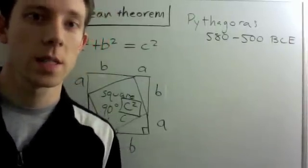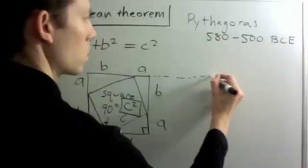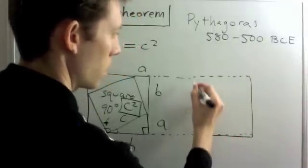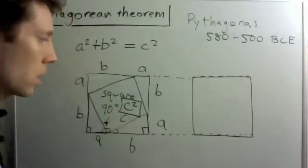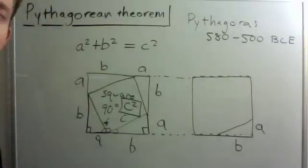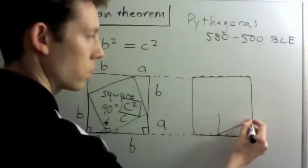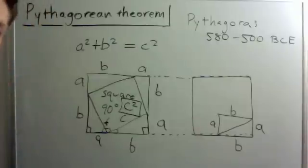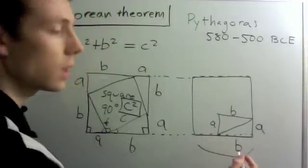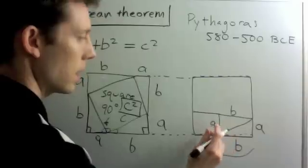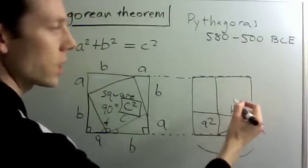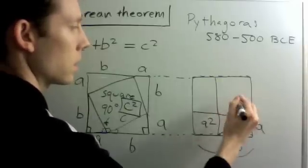Now I'm going to draw a second square the same size as the one I just drew, but this time I'm going to decompose it in a different way. I'll start by drawing the same triangle that I started with over here, but now I'm going to draw another triangle right across from the c edge of this triangle, so I have a rectangle with sides a and b. Now remember that this whole side here has length a plus b, so that this right here is another square and the area of this square is a squared. Likewise, this large section here is also a square and the area here is b squared.